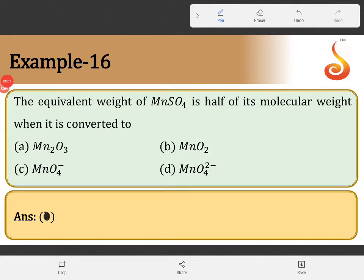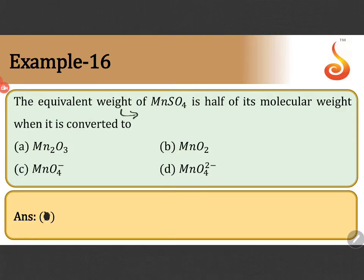Equivalent weight of manganese sulfate is half its molecular weight when it is converted to Mn₂O₃ or MnO₂ or MnO₄⁻ or MnO₄²⁻. See, just check the oxidation state of manganese. Now, because equivalent weight depends upon N factor.